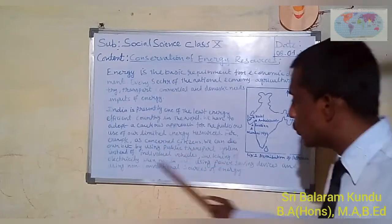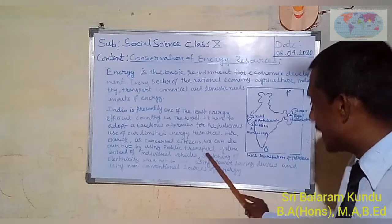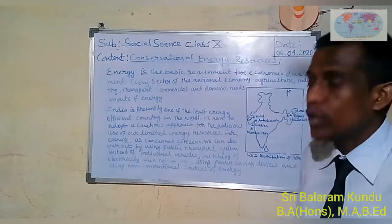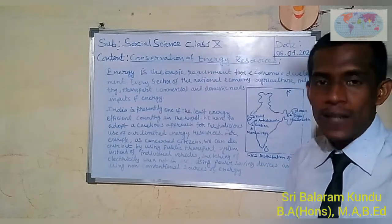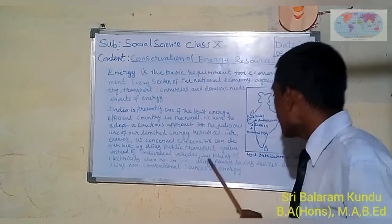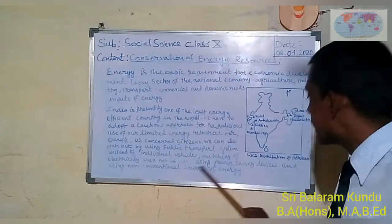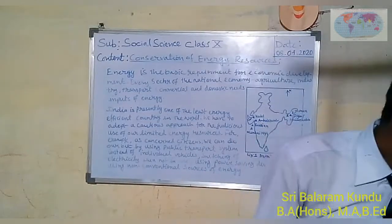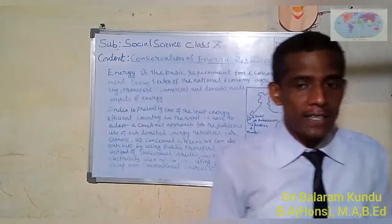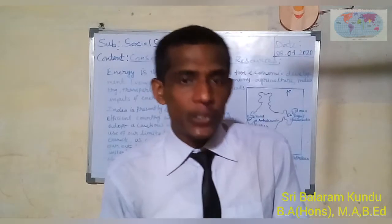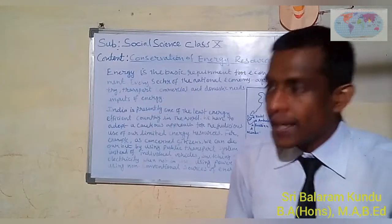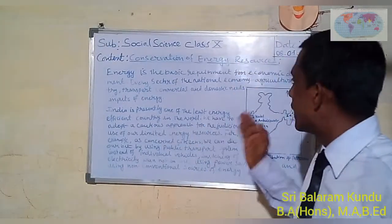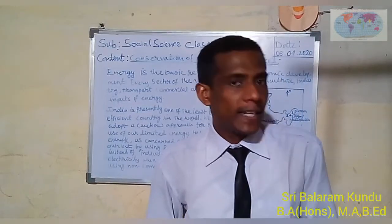As responsible citizens we can do our bit by using public transport and carpooling instead of individual vehicles like motorcycles and personal cars. We should also switch off electricity when not in use, use power-saving devices, and use non-conventional sources of energy such as wind energy, solar energy, geothermal energy, and tidal energy. In this way we can conserve different types of energy resources.